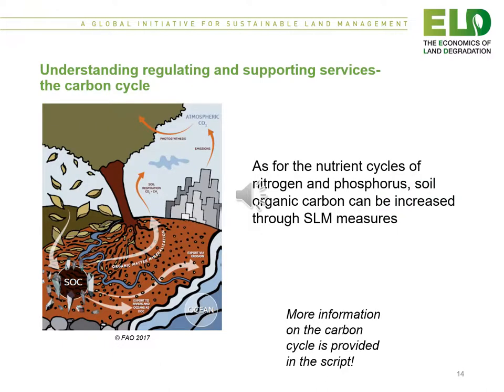Another example is the carbon cycle. As with nutrient cycles for nitrogen and phosphorus, soil organic carbon can be increased through sustainable land management measures. More information on the carbon cycle is provided in the script.